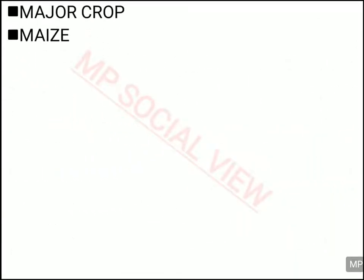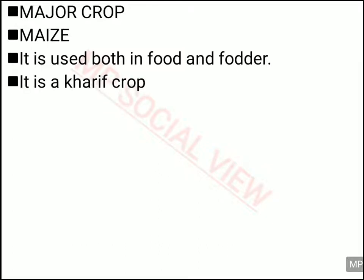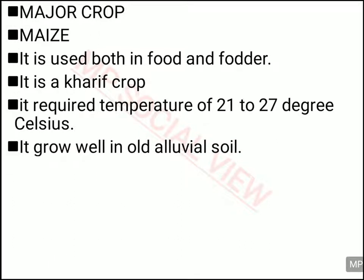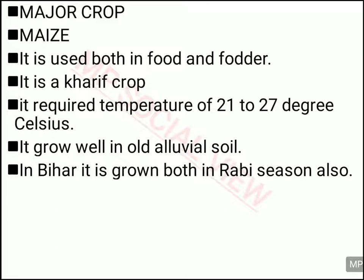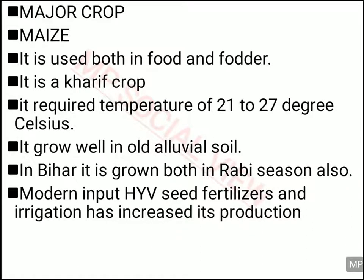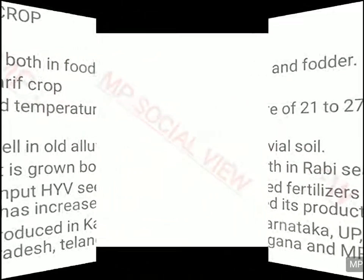Now we are going to discuss about Maize. Maize is another major crop of India, used both as food for humans and fodder for animals. It is basically a Kharif crop, requiring a temperature of 21 to 27 degrees Celsius and alluvial soil for its cultivation. In Bihar it is also sown in the Rabi season. Modern methods including HYV seeds, fertilizers and irrigation can be used to increase its production. It is produced in Karnataka, UP, Bihar, Andhra Pradesh, Telangana and Madhya Pradesh.